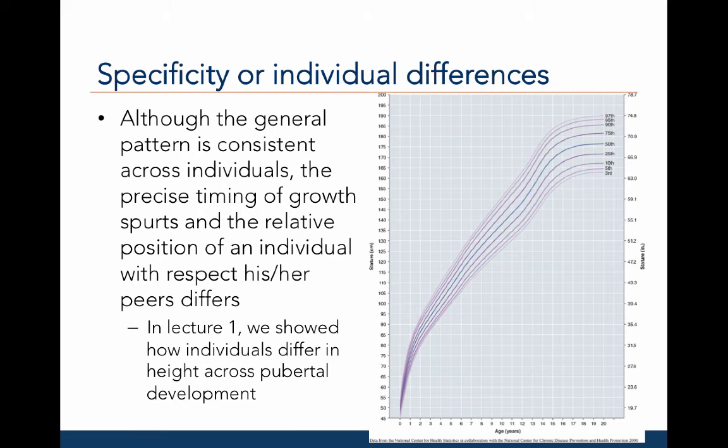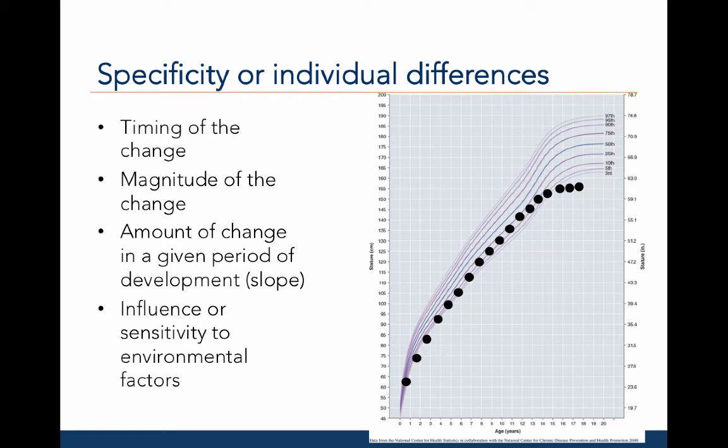Although the general pattern is consistent on average, the precise timing of growth spurts and the relative position of an individual with respect to his or her peers or his or her percentile ranking often differs. Recall in lecture one, we discussed several scenarios in which individuals differed in the amount, rate, and timing of height across pubertal development. The timing, magnitude, and amount of change over a period of development is equivalent to the change or slope of its growth. Some of these indices are sensitive to environmental factors.